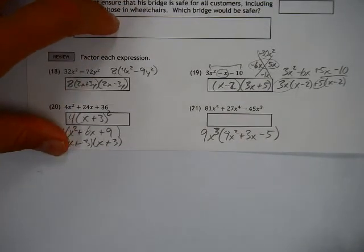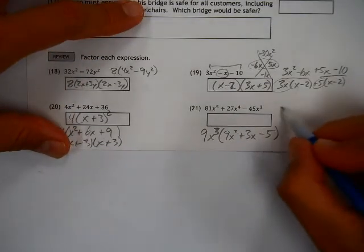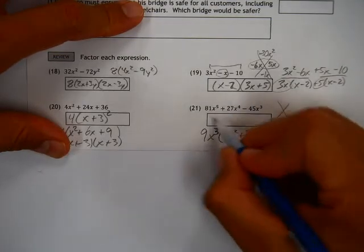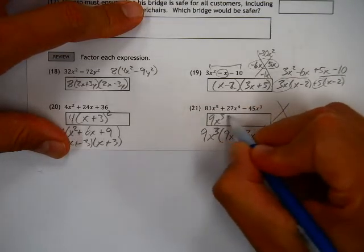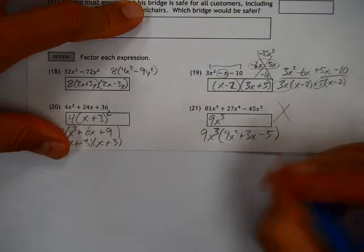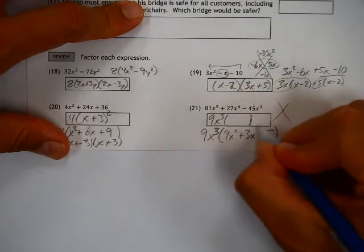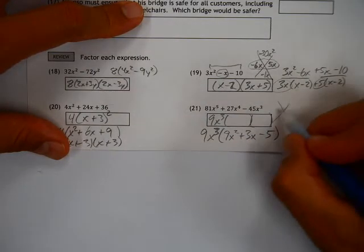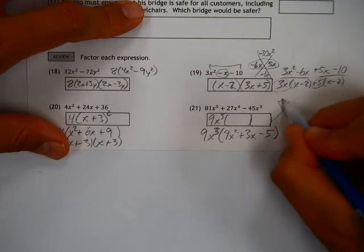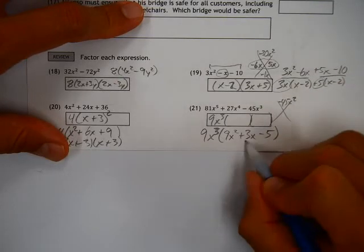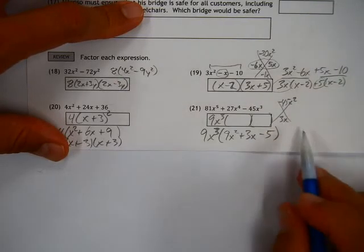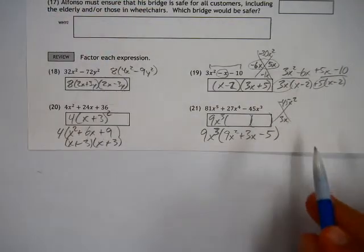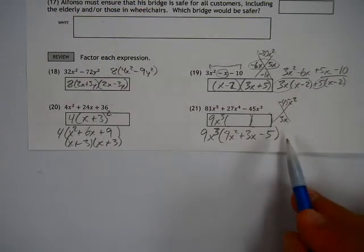Now the question is, does that factor any further? Well, we've got to go back to our diamond problem again. The 9x to the third power is out in front. That stays. Now, in theory, we can get another set of parentheses going here. If this times that, which is negative 45x squared, and positive 3x are here. Well, that should mean that two numbers can multiply together to get 45 and add them together to get 3.